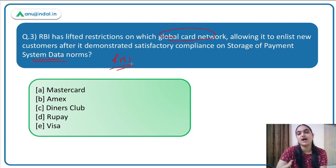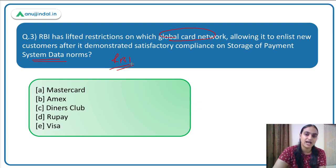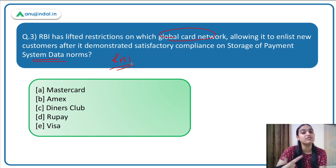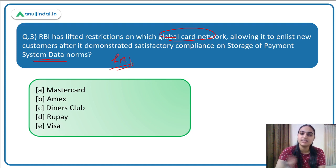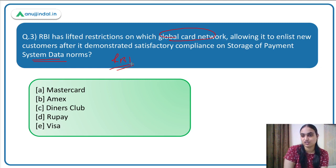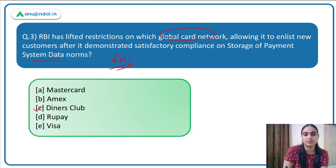Some card networks did not adhere to these norms and RBI put restrictions on them. Recently, one of those card networks complied with all the norms, and thus RBI removed the restrictions on that card network related to enlisting new customers. The card network in question is Diners Club — the answer is option C.